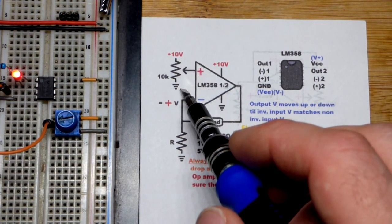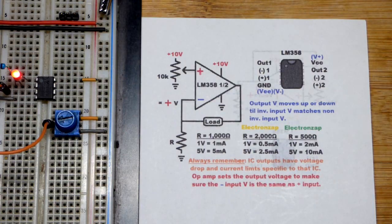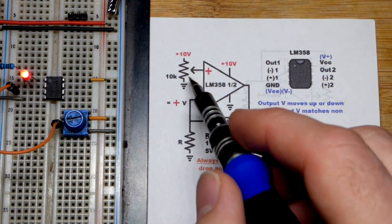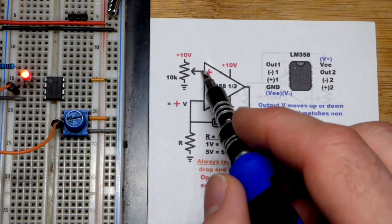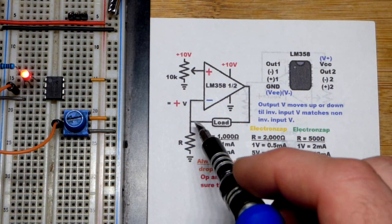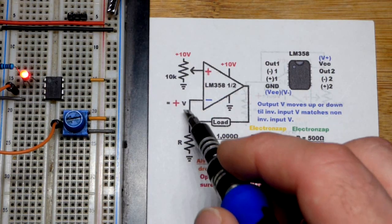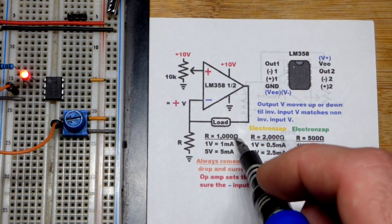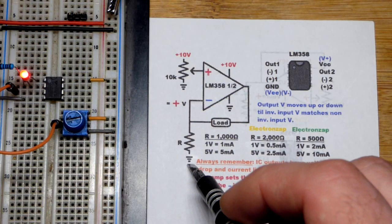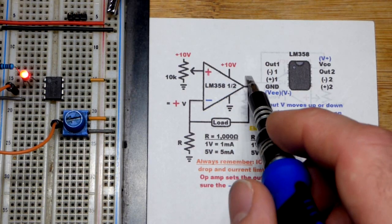We have a trim pot here we can adjust anywhere from 0 to 10 volts. Let's use 5 to make things simple. I set it to half the supply voltage, which gives us 5 volts. That means the op-amp is going to do what it can to keep 5 volts across the resistor. If it has a thousand ohms, we get 1 milliamp per volt, about 5 milliamps of current.